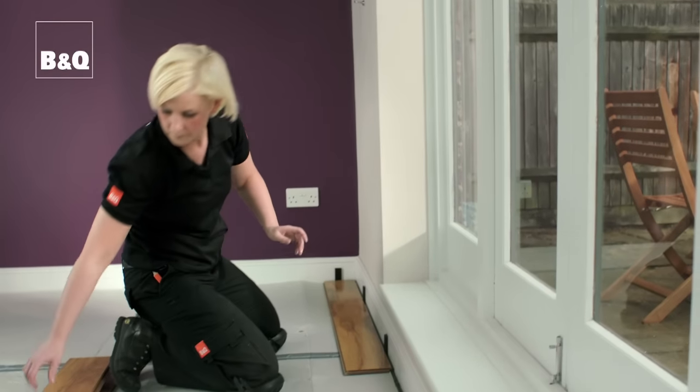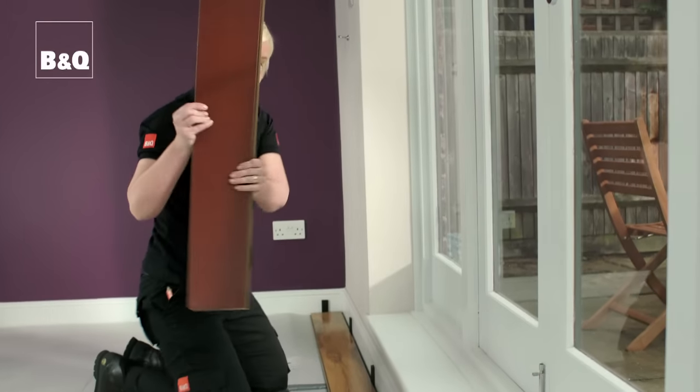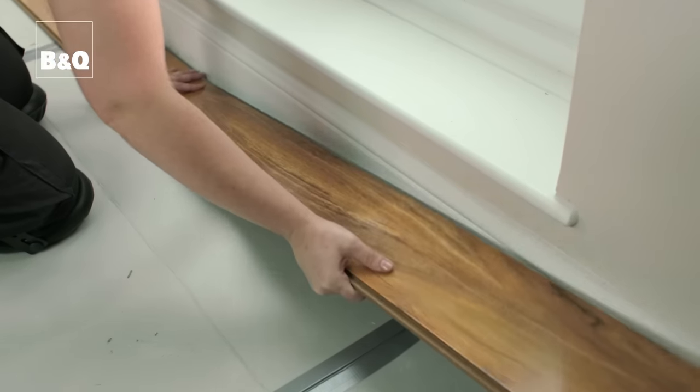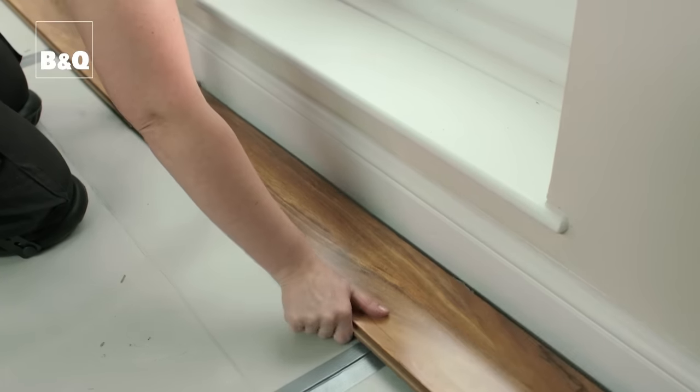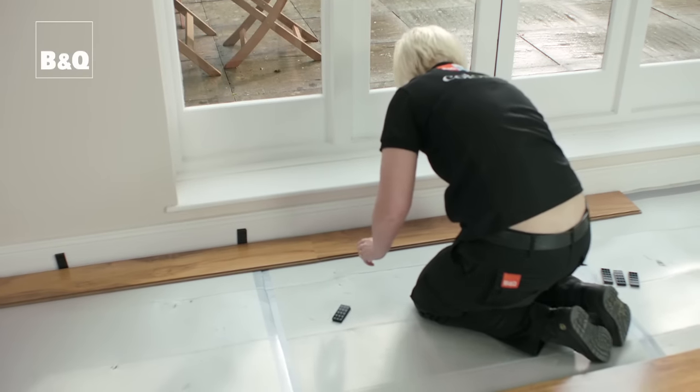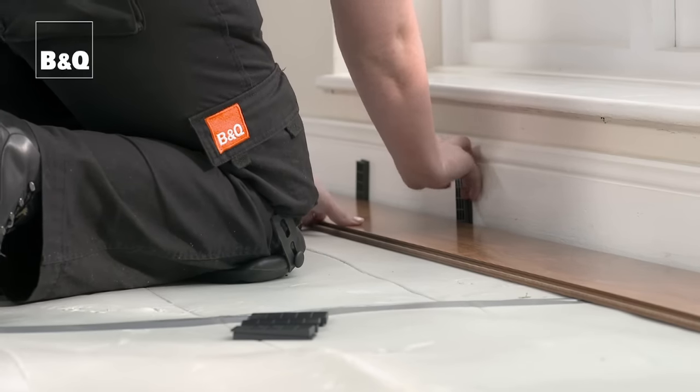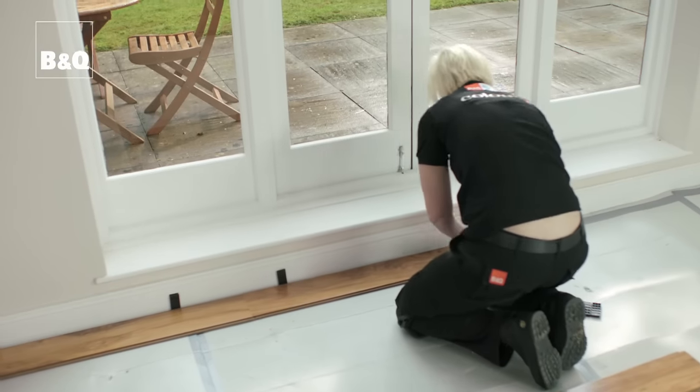Lay the next board end on, making sure that the tongue of one board sits snugly in the groove of the previous one, at a 30 degree angle. Lower the board and lock into place. Carry on doing this until you get to the end of the row. You'll probably have to cut a board to fit the last row.